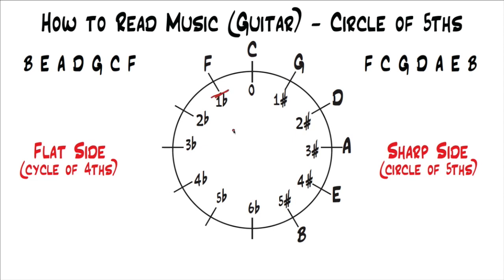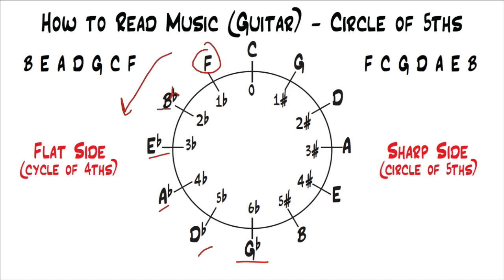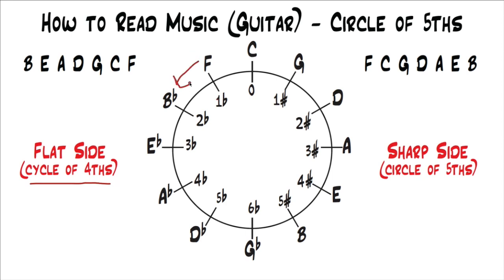Now we fill in the numbers on the flat side, going from one to six. The key of F has one flat. Going counterclockwise, each key adds a flat: two flats, three flats, four flats, and so on. Filling in the letters — B flat has two flats, E flat has three, A flat has four, D flat has five, and G flat has six. Everything on the flat side has a flat in the name except F. The reason it's called the cycle of fours is because from F to B flat is four notes, from B flat to E flat is four, and so on.